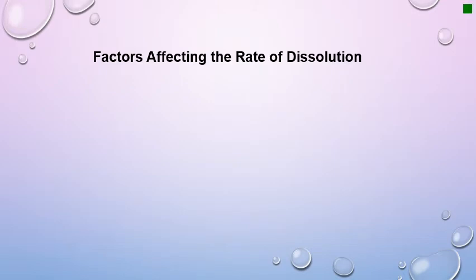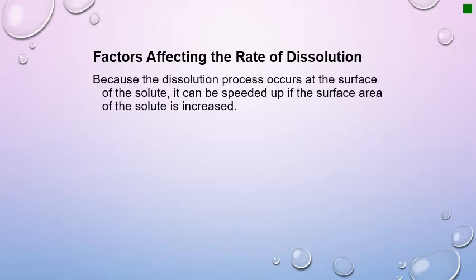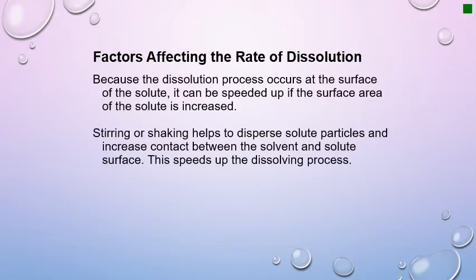The next piece we will review is the factors that affect the rate of dissolution. Dissolution is another term for dissolving — you may also see the terms solvation or hydration. Because the dissolution process occurs at the surface of the solute, it can be sped up by increasing the surface area, giving more contact between the solute and solvent. Stirring or shaking is the second method; it brings fresh solvent molecules into contact with the solute surface, speeding up the rate of dissolving.